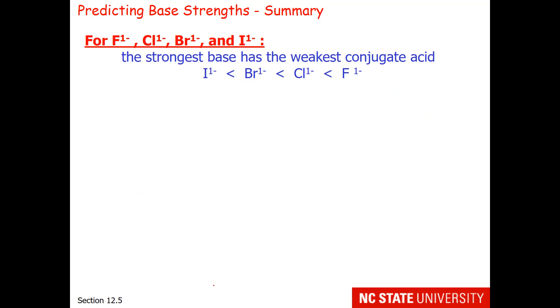So in general, this is the summary for predicting base strengths. The strongest base has the weakest conjugate acid. So this would be a primary effect.